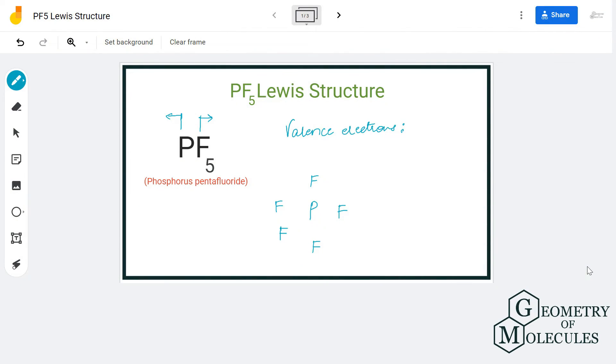Hi guys, today in this video we are going to determine the Lewis structure for PF5, the chemical formula for phosphorous pentafluoride. This molecule is made up of five atoms of fluorine and one atom of phosphorous.